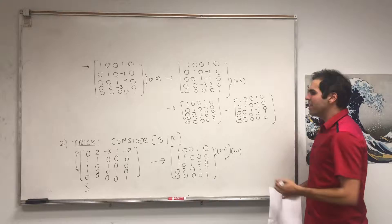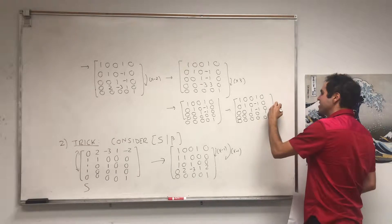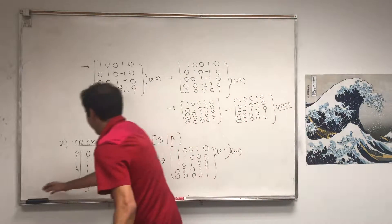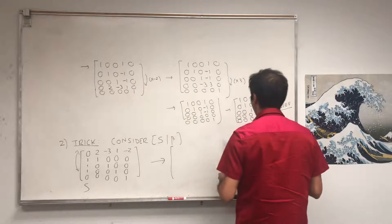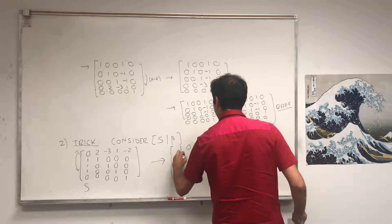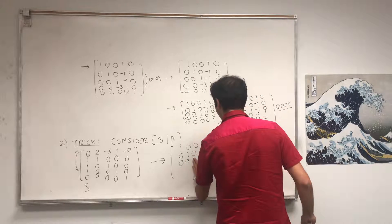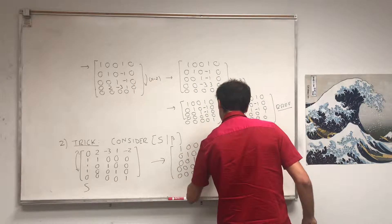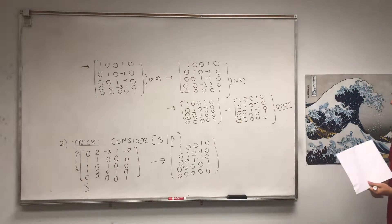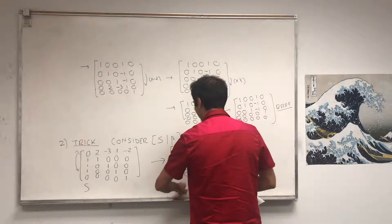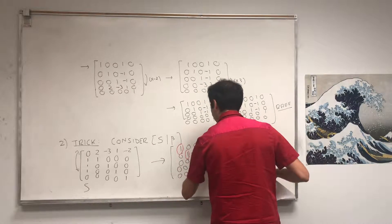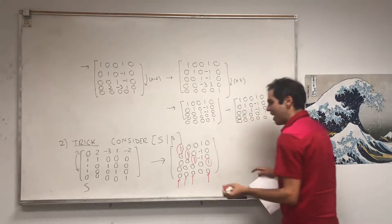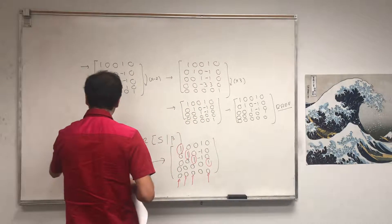Once the matrix is in row echelon form, we figure out where the pivots are. The pivots are in the first, second, third, and fifth columns of our matrix, which tells us that our answer lies precisely in the first, second, third, and fifth columns of our original matrix.